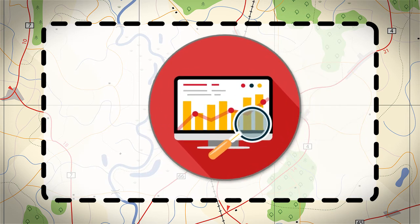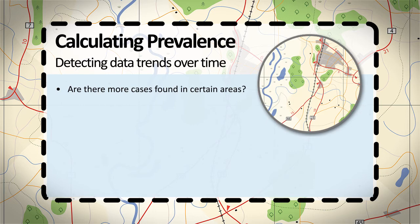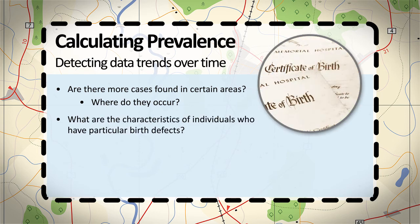You can detect data trends by describing changes over time. Are there more cases found in certain areas? Analyzing by place can help identify geographic areas where increases in cases are occurring. Analyzing by demographic characteristics can help find populations who may be most susceptible to particular birth defects. The most frequently used demographic variables for analysis are parents' age, race, and ethnicity, and infant sex.